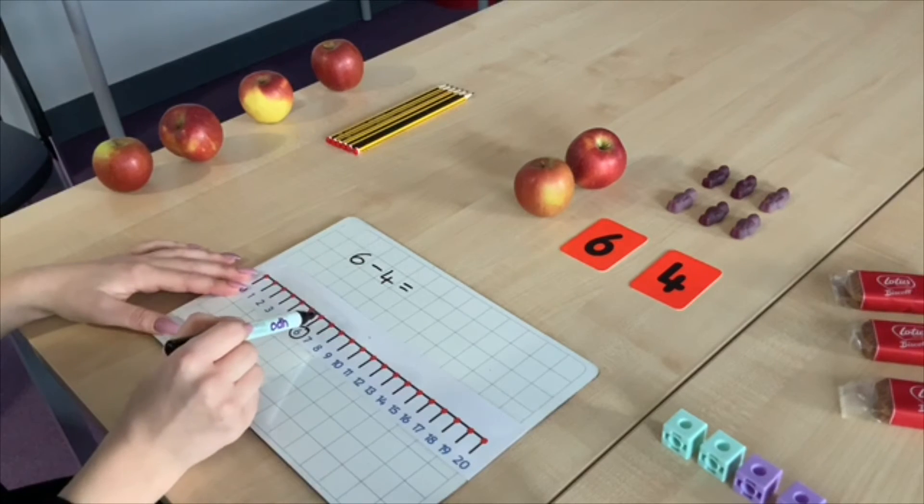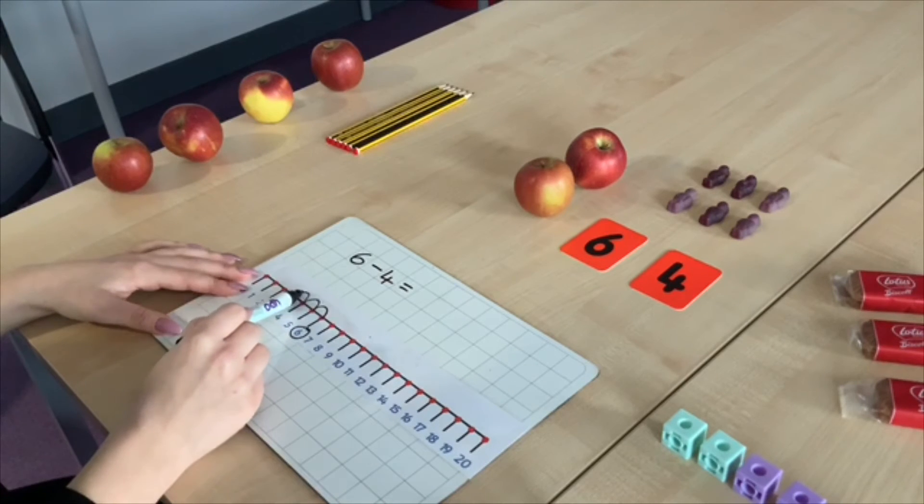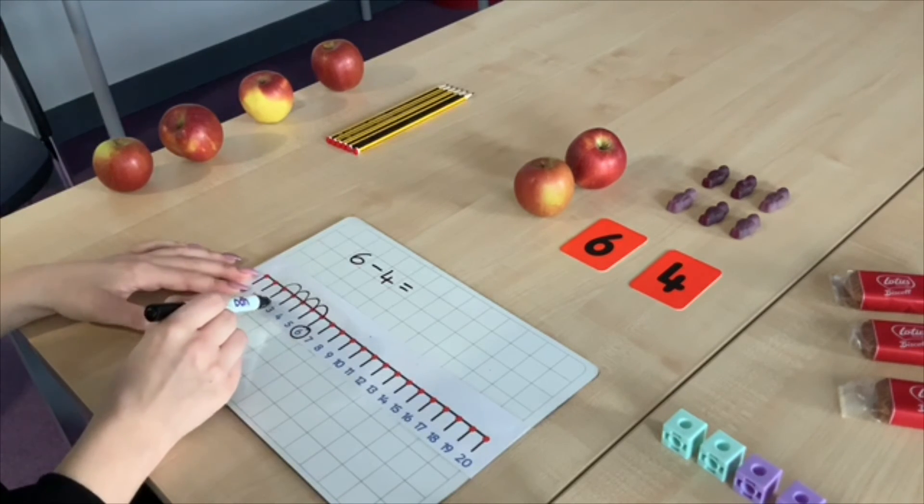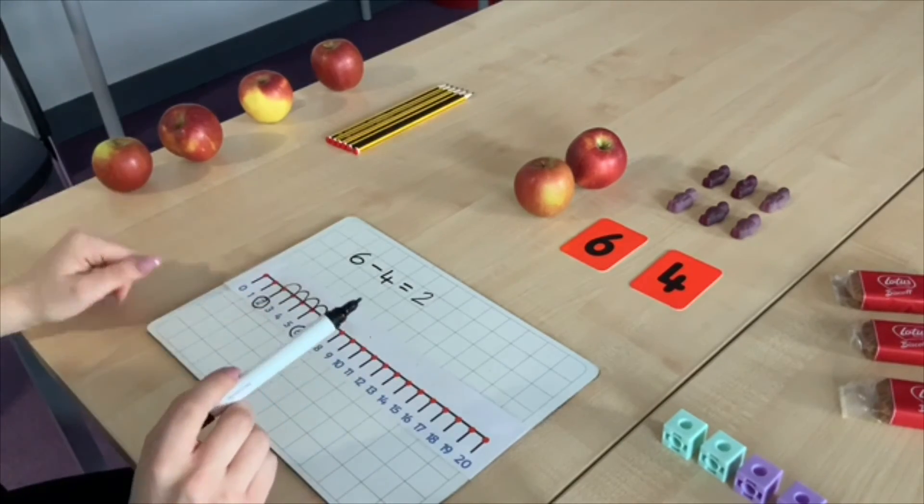So we're going to start with six and make four jumps backwards. One, two, three, four. Our answer is two. Six take away four equals two.